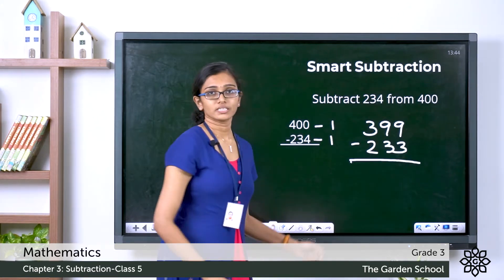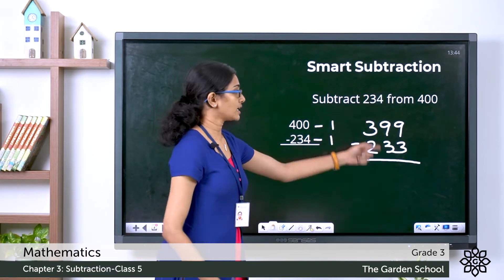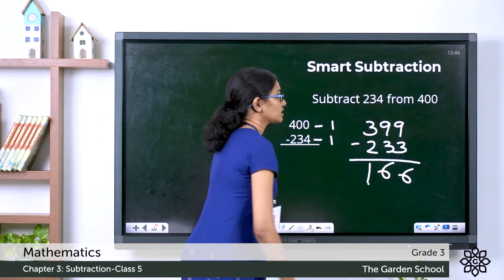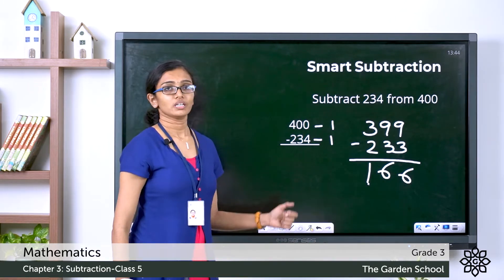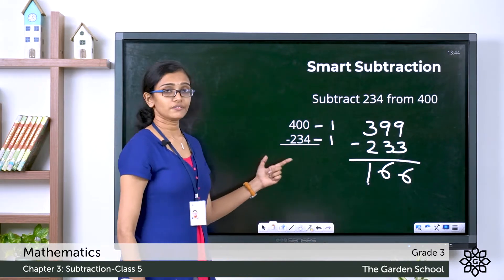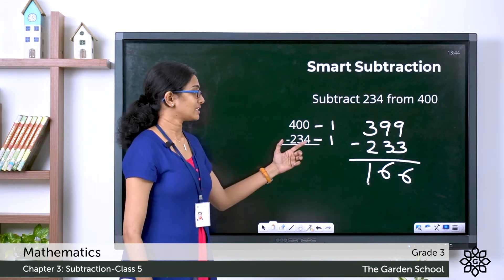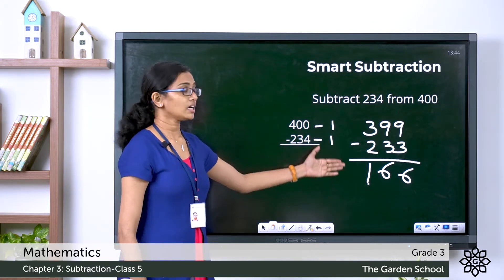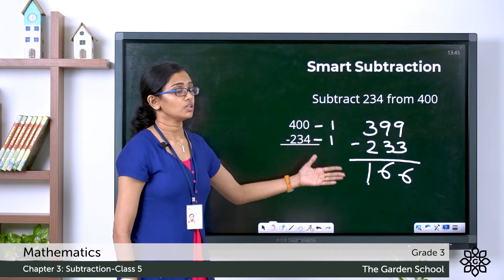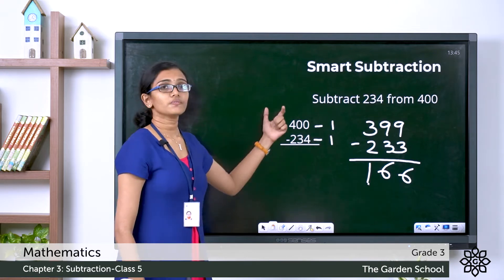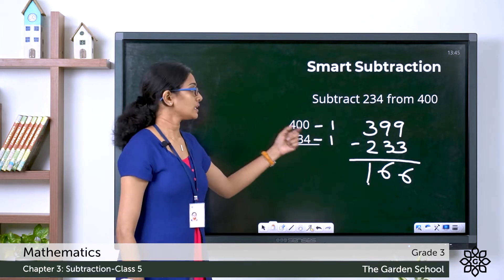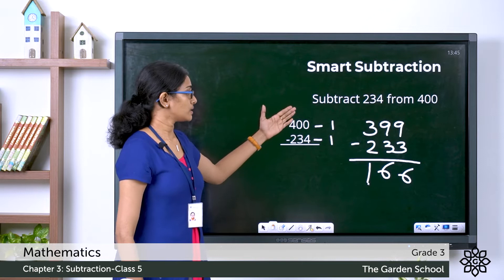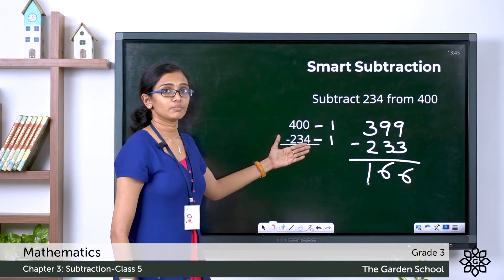Now doing this subtraction: 9 minus 3 is 6, 9 minus 3 is 6, and 3 minus 2 is 1. See? The difference remains the same. The answer is the same. Am I doing any regrouping? No. Instead of regrouping, I have subtracted 1 from both the minuend and the subtrahend.